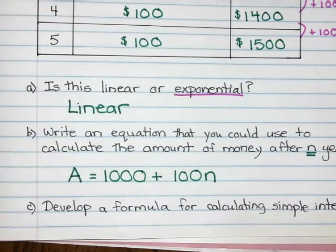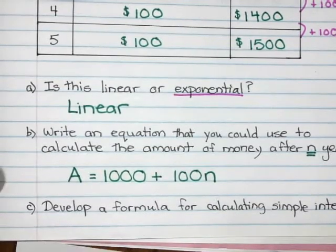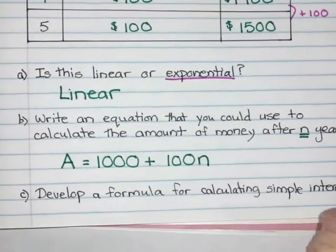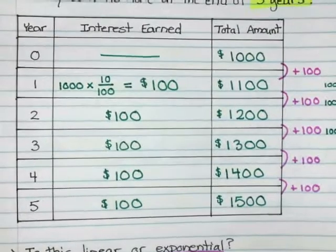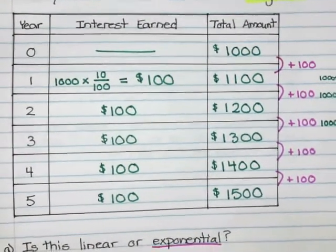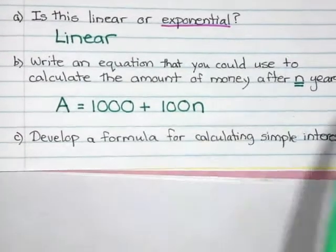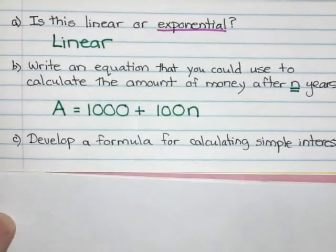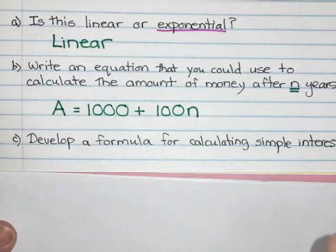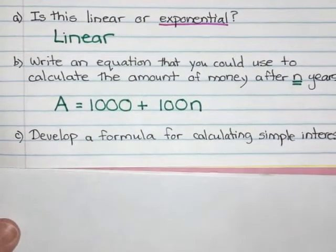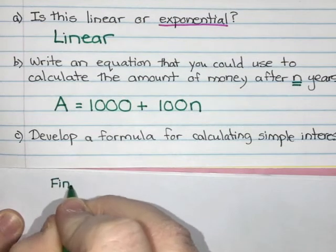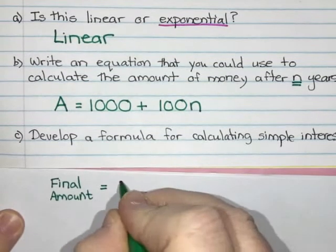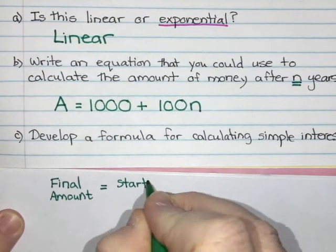Now my last part says develop a formula for calculating simple interest. For this one, we're going to have to put our thinking caps on and see if we can come up with a way to calculate simple interest and not just for this specific question. When I take a look at this equation that I have here, I have A for my final amount equals $1,000. Now that $1,000 is my starting amount, it was how much money Carlos put in at the beginning. So I'm going to write kind of a little word equation. I'm going to say that my final amount of money equals how much I started with, so my starting amount or Carlos's starting amount.